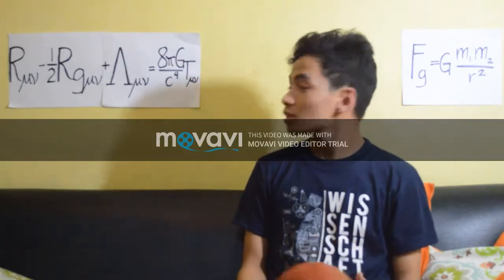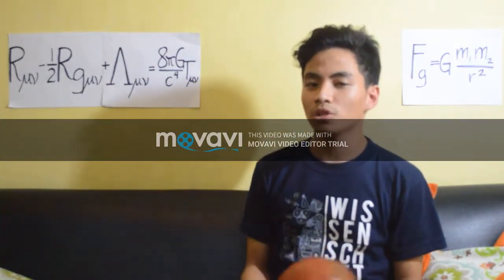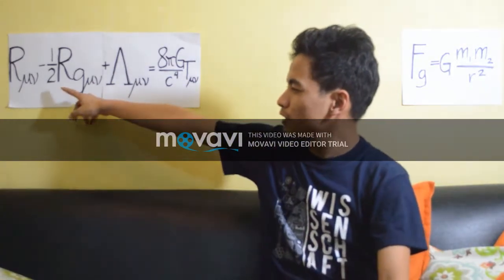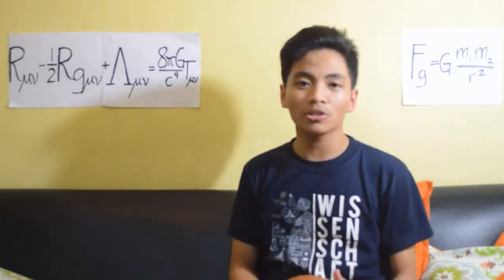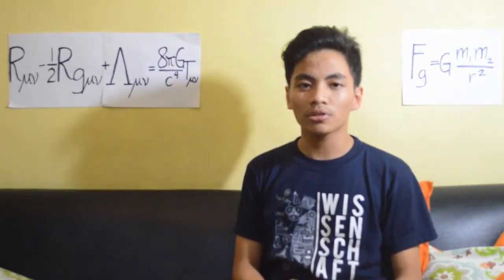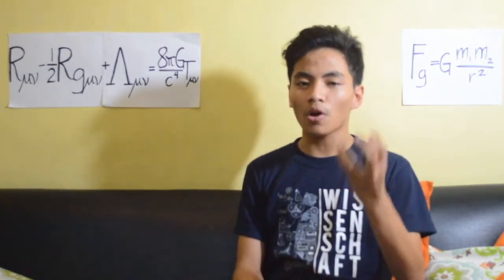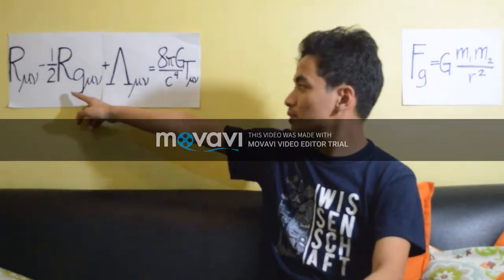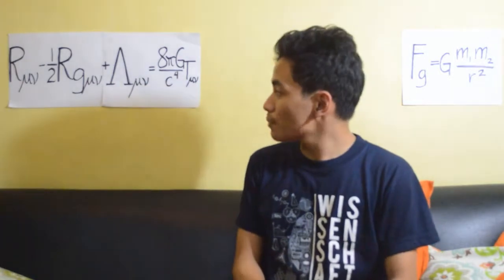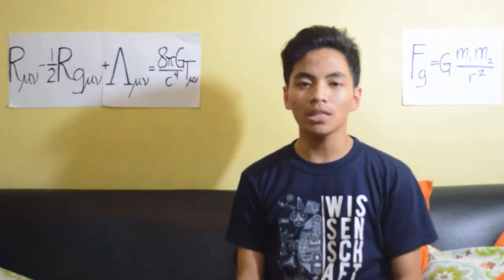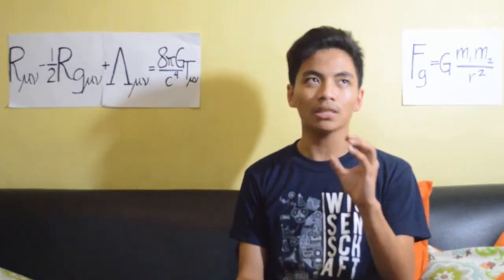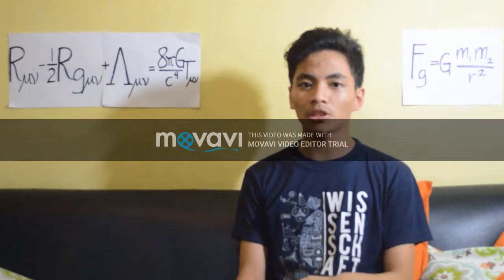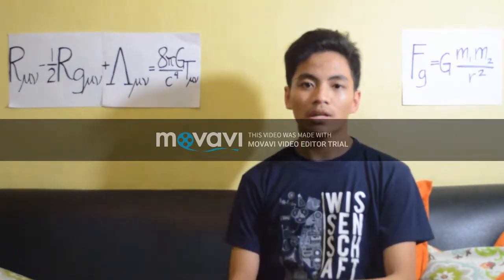Let's talk about the Einstein field equations. The first part of the equation is called the Ricci tensor, which talks about the curvature of space-time in which a certain object is located — it is a contracted form of the Riemannian tensor. Next is the negative one-half of the Ricci scalar times the metric tensor. The metric tensor is a basis vector that forms certain coordinates. The Ricci scalar is a contraction of the Ricci tensor found in the first part of the equation.